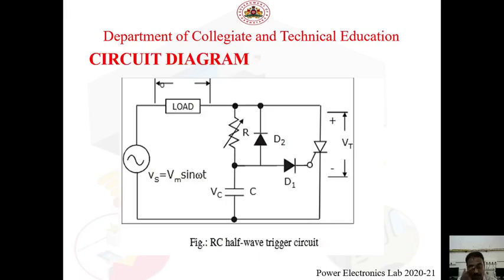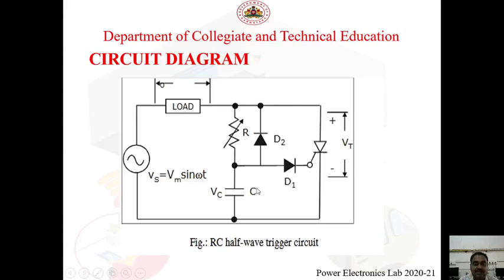In the circuit diagram, the source is used to feed supply to the SCR. Two diodes D1 and D2 are used, along with a variable resistor and a capacitor. The load can be a resistor or a 60-watt lamp. The same supply is given to both the gate as well as across the SCR — that is, anode to cathode.